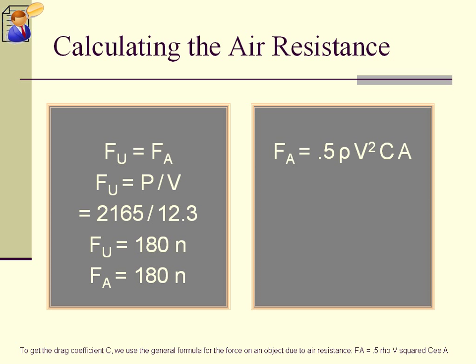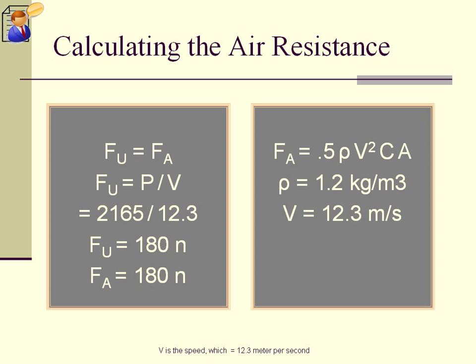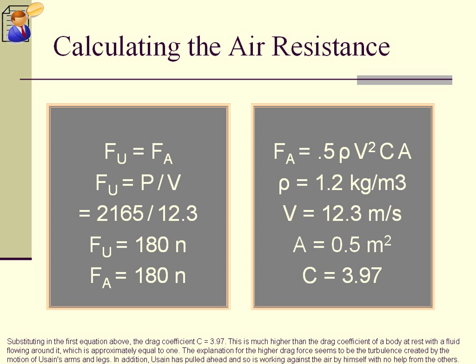To get the drag coefficient C, we use the general formula for the force on an object due to air resistance: Fa equals 0.5 rho V squared Ca. Where rho is the atmospheric density, 1.2 at 20 degrees Celsius, V is the speed which equals 12.3 meter per second, and A is Usain's cross sectional area equals 0.5 meter squared. Substituting in the first equation above, the drag coefficient C equals 3.97.